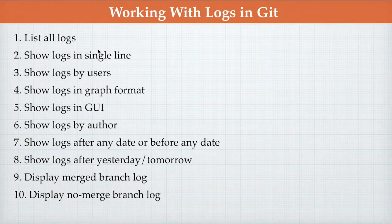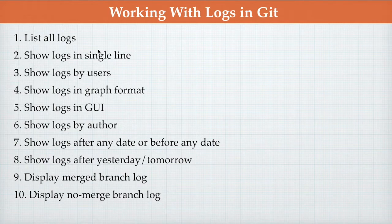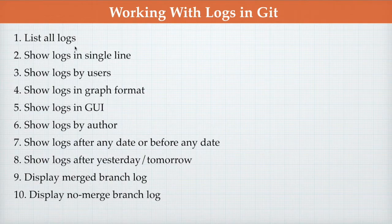After that we are going to work with the filtering part — if you wanted to display some logs based on the author who commits, you can filter that as well. Then if you wanted to put some date range, or use relative ranges like yesterday, you can use that as well. We will also see how to see the log for a particular file, and at the end we will see what commits or changes were made by users when branches were merged into the current branch. So without further delay, let's quickly start.